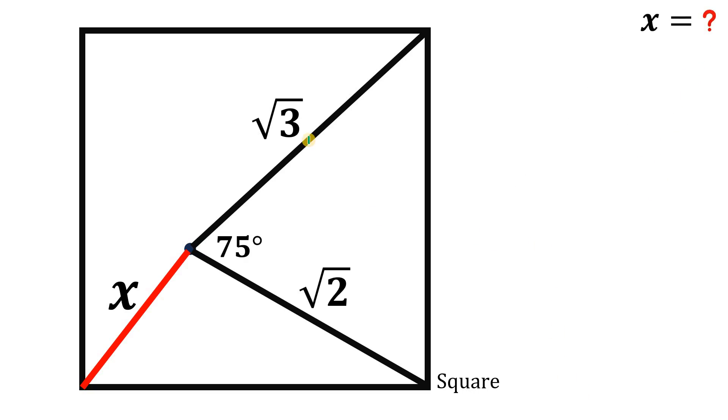So given the square and those informations, the goal is to find the length of this segment x. Now our solution to this kind of question is what we call the solution outside the box. So let me show you. First let's focus on this triangle and what we're going to do is rotate this triangle outside of our square and it looks something like this.